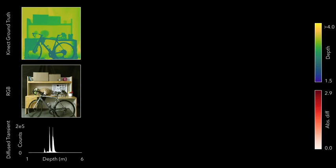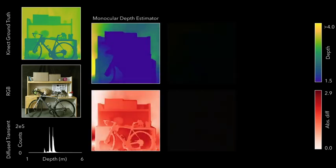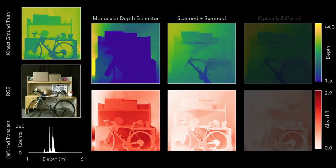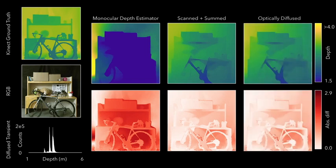To assess the performance of our algorithm with a real diffused SPAD, we captured a scene with both a scanned SPAD and optically diffused SPAD, and reconstructed both depth maps against the ground truth of the Kinect. We observed near or identical performance of our algorithm when using the real diffused transient as when using a scanned and summed transient. For more details, please refer to the paper.